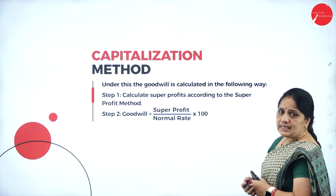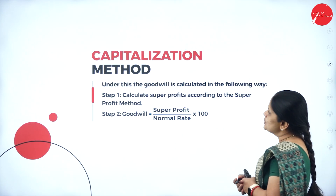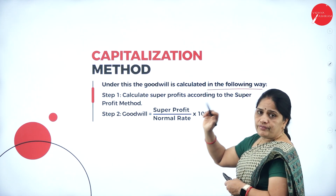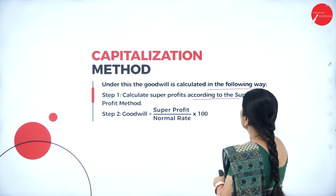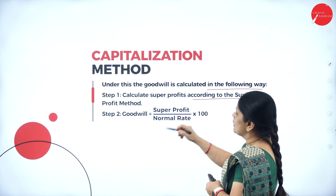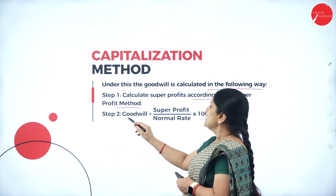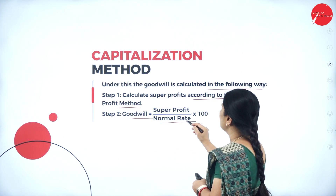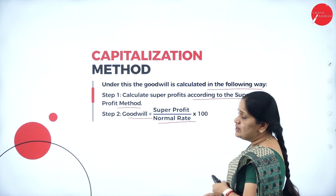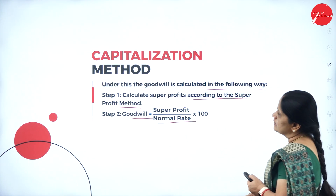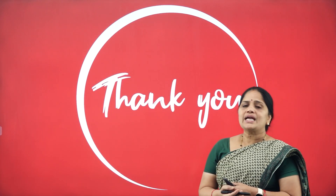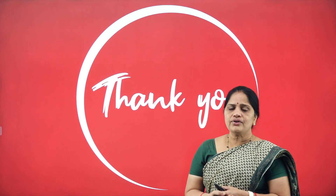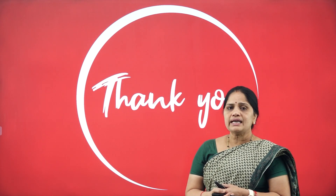Under the capitalization method, first calculate super profits according to the super profit method, then goodwill = super profit / NRR × 100. With this we come to the end of this session. Hope you have all followed it. Thank you.